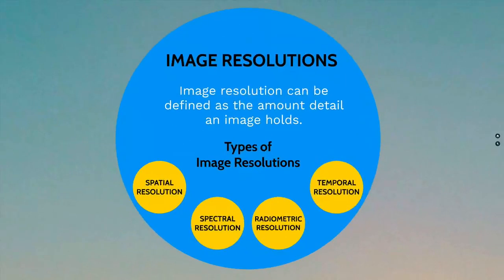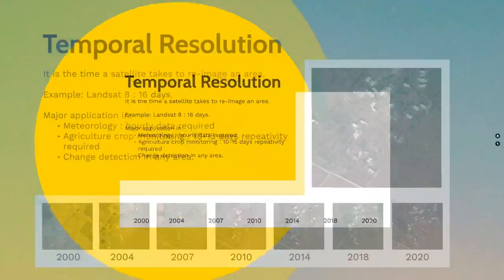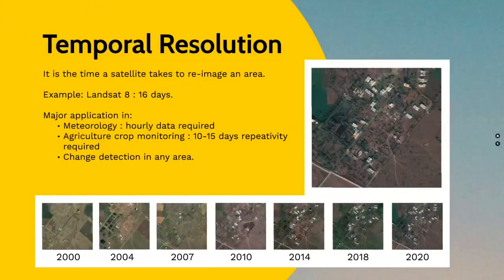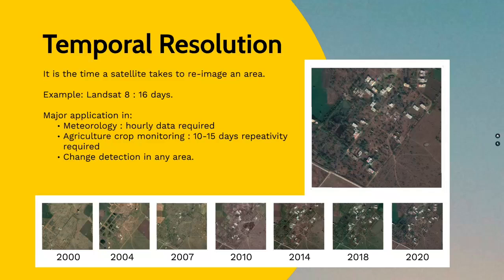Now let's move to the next and final section: temporal resolution. Temporal resolution is defined as the total time a satellite takes to revisit an area to take pictures. This helps us understand landscape characteristic changes over the period of time.